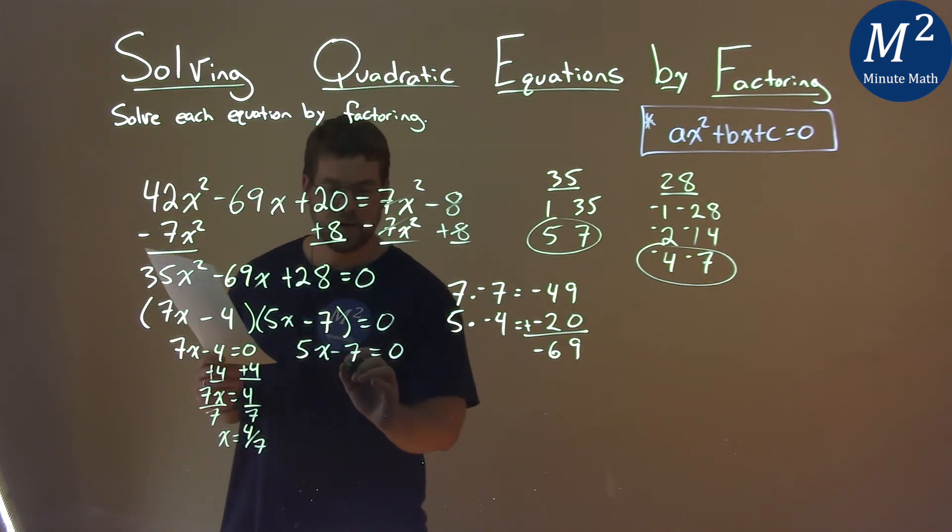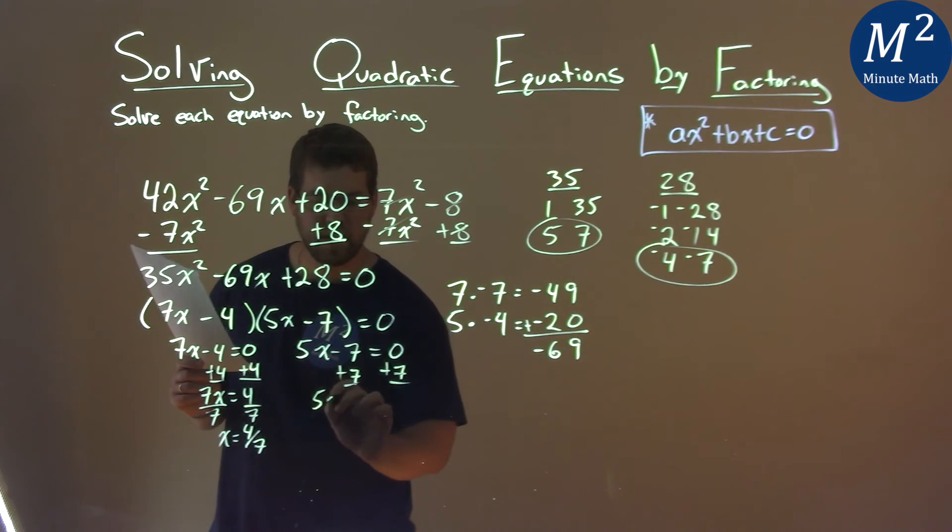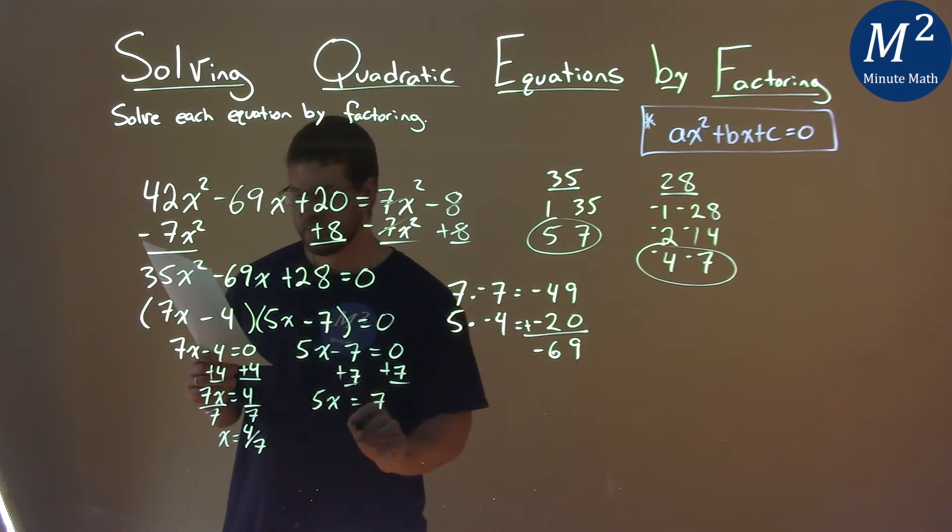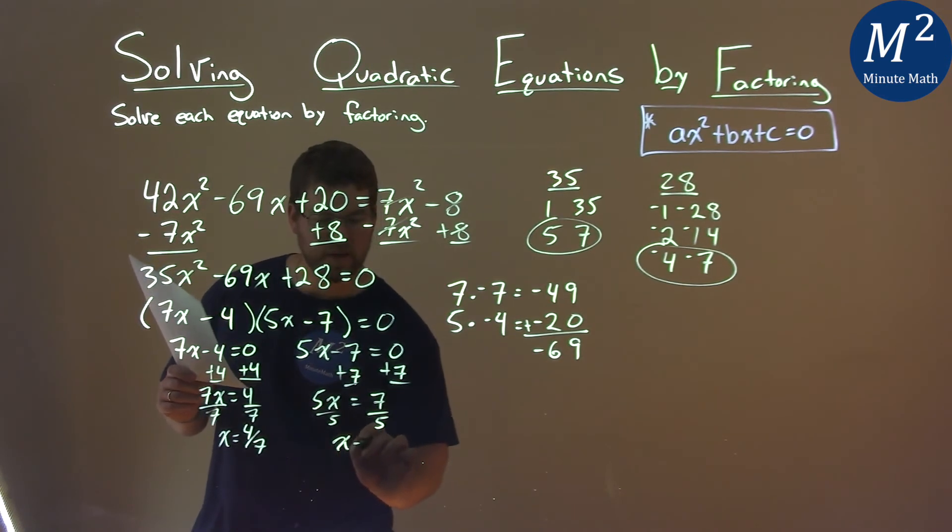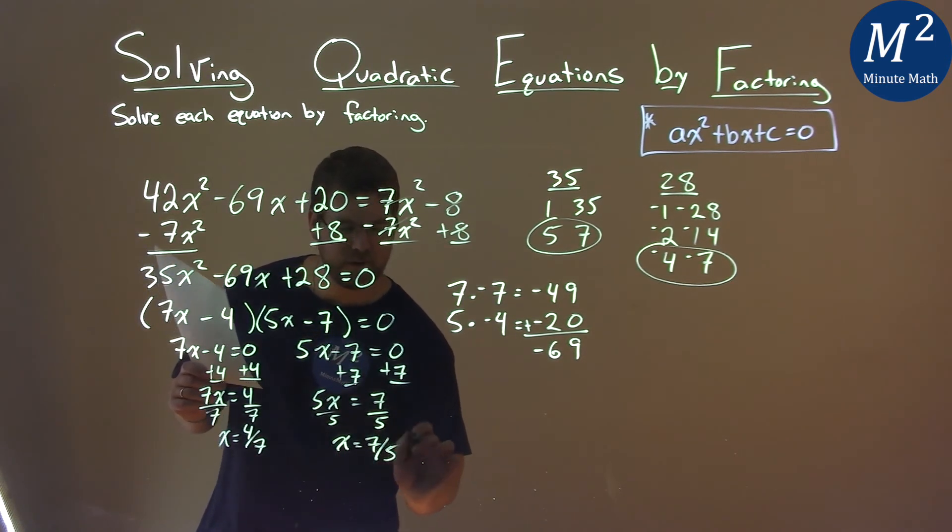Do the same thing with the second equation. Add 7 to both sides, and 5x here equals a positive 7. Divide by 5, and x equals 7 fifths.